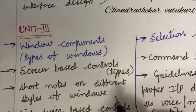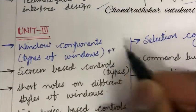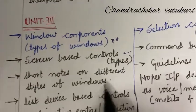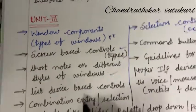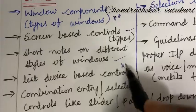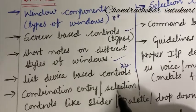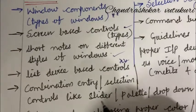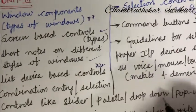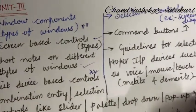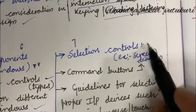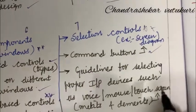The unit 3 question is window components. Types of windows may be short or long question. Screen based controls and the types. Short notes on different styles of windows. List device based controls is one of the topmost questions. Combination entry. The selection control like slider, palette, drop down as well as pop up may be the very important question. This is part of 6AB as well as 7AB. Selection control is a short question. Command buttons is a short question.